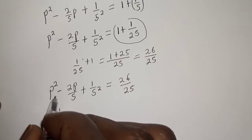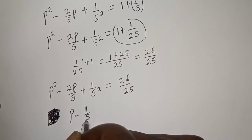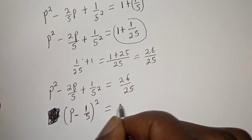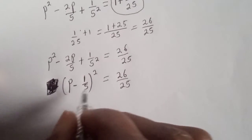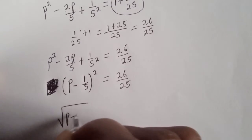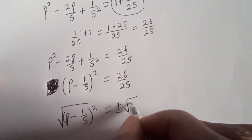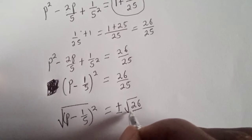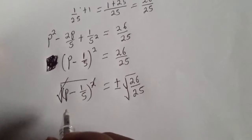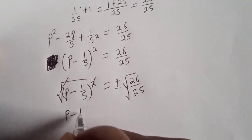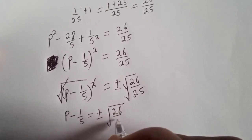The left side factors as a perfect square: p minus 1 over 5, all squared, equals 26 over 25. Taking the square root of both sides, p minus 1 over 5 equals plus or minus the square root of 26 over 25, which simplifies to plus or minus square root of 26 over 5.